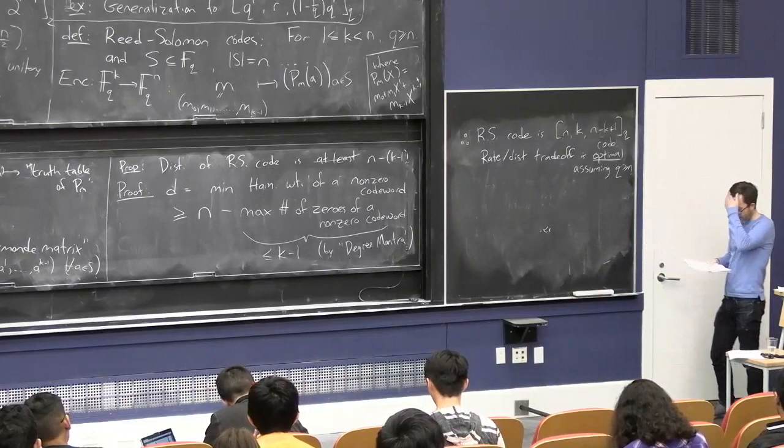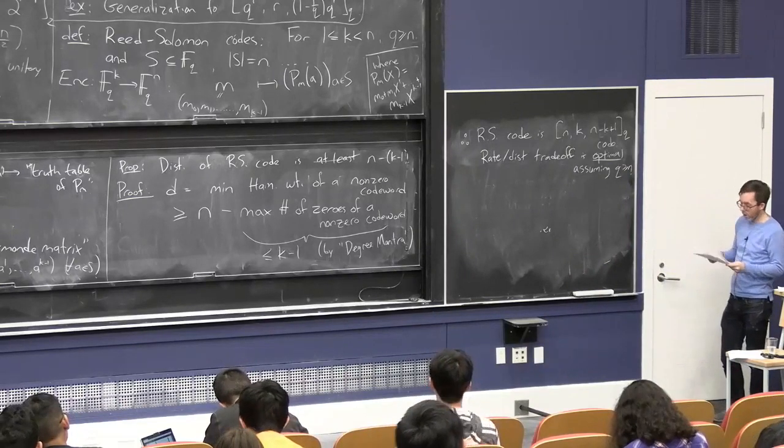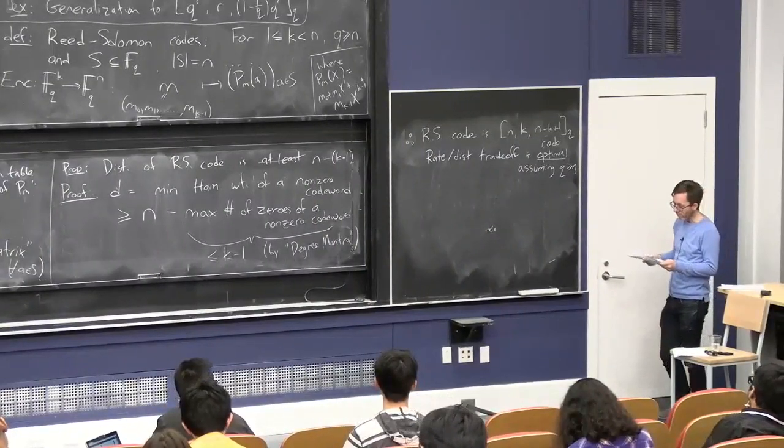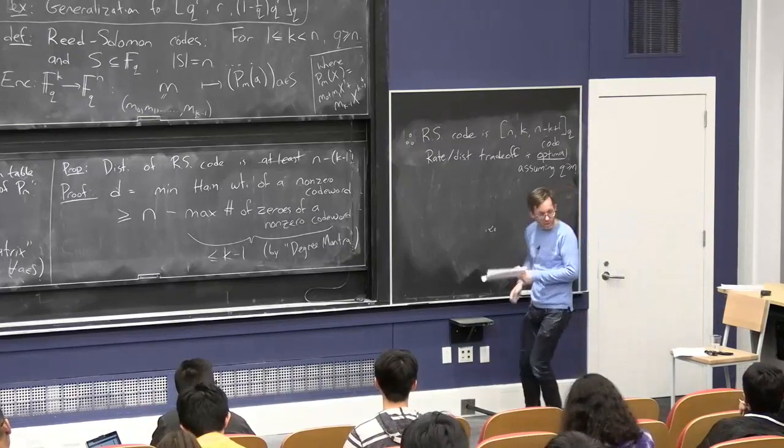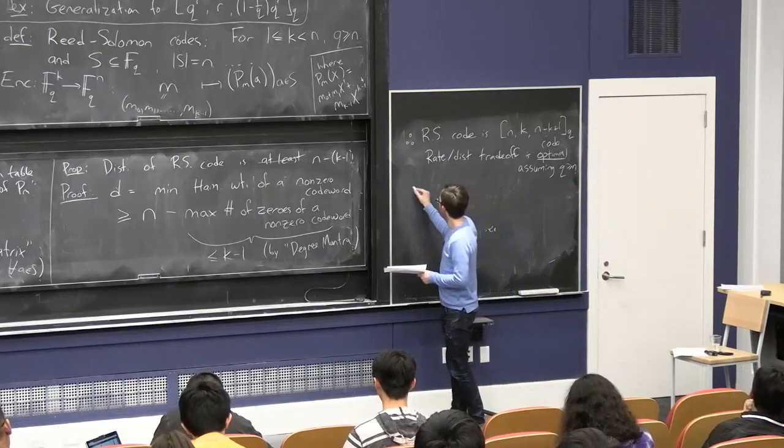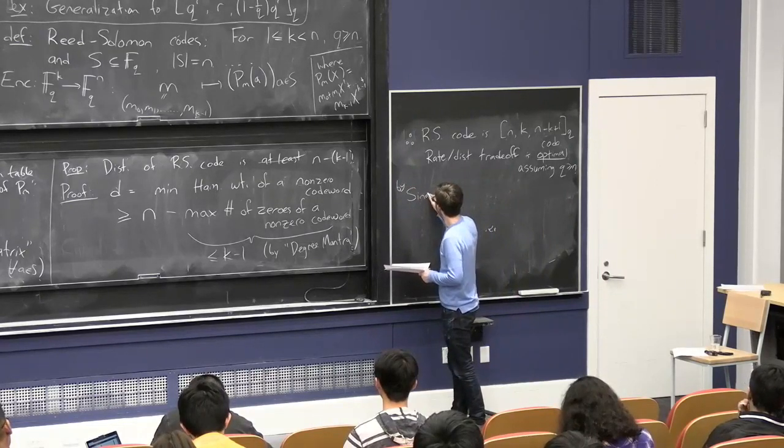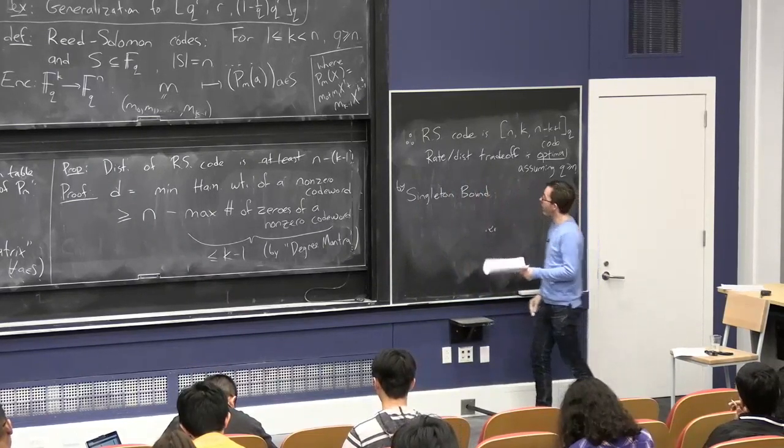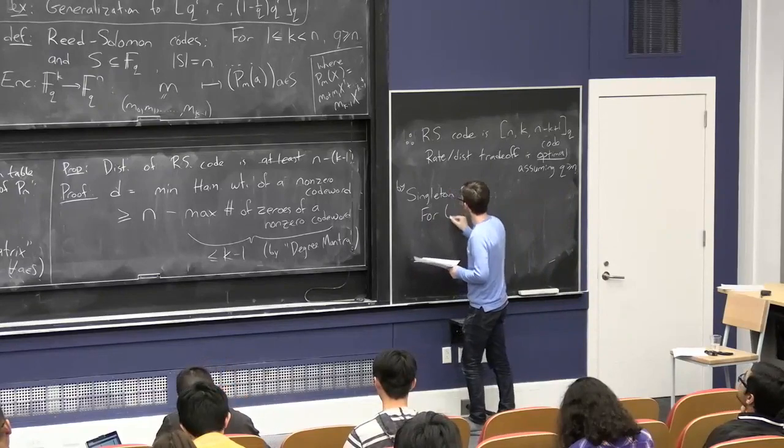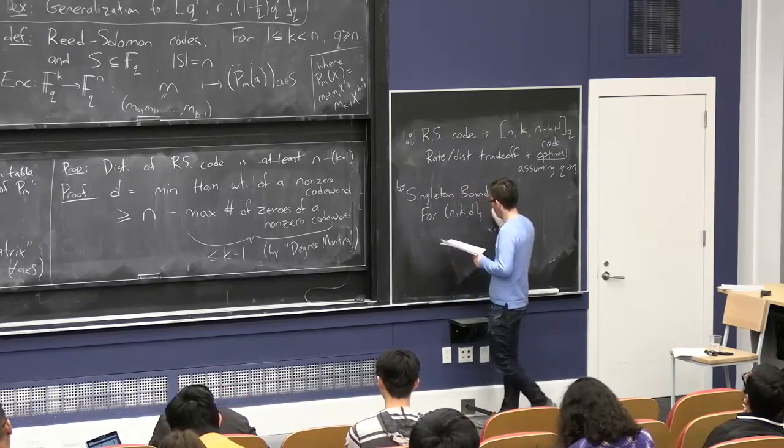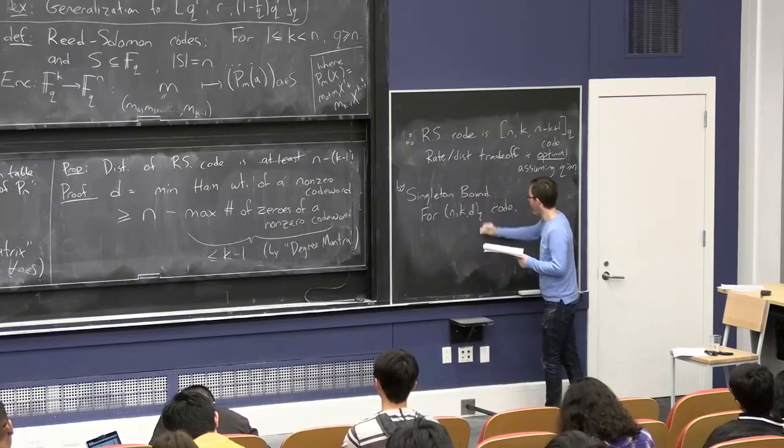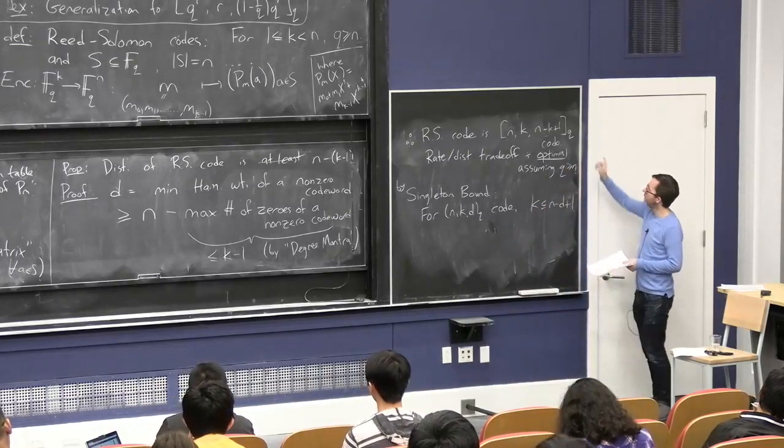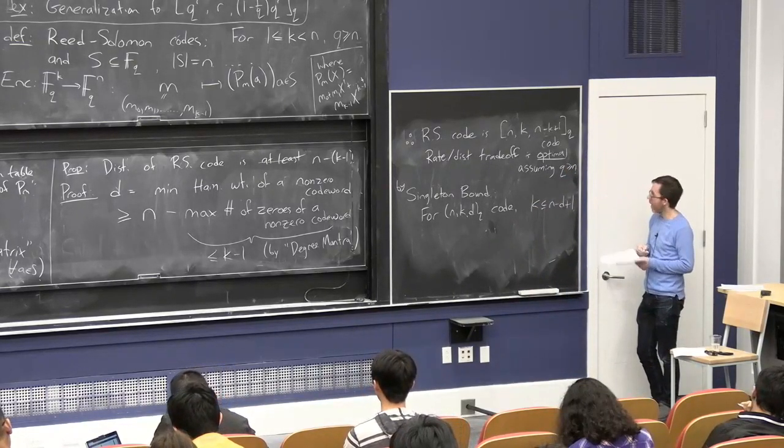If you're willing to have a really big alphabet size, then this is the best possible trade-off you can get between rate and minimum distance. And that's the consequence of what's called the singleton bound, which is a very trivial bound that says exactly this. For any nkd code, not even necessarily linear, k has to be at most n minus d plus one, which is equivalent to saying that d is at most n minus k plus one.